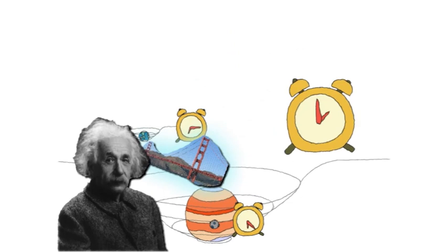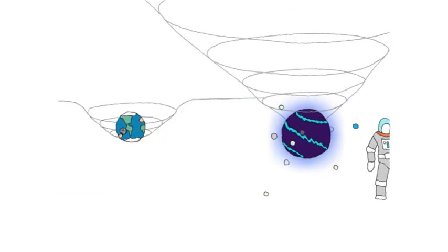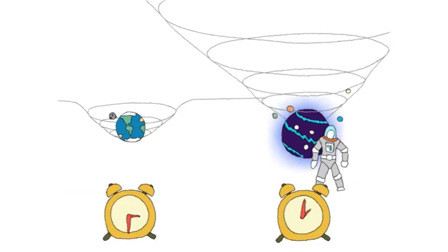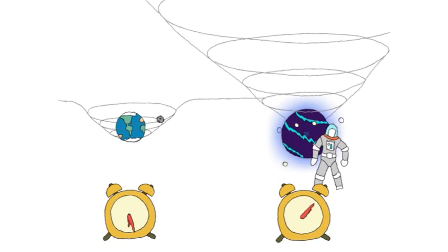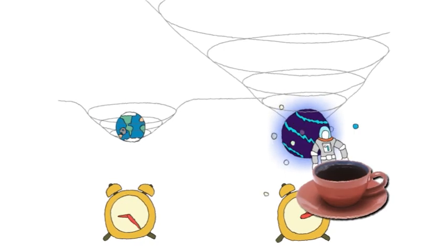Nowhere is gravity stronger than in the vicinity of a black hole. So if you could hang out near a black hole, time for you would move more slowly than on Earth, which means in the time it takes you to have a cup of coffee, empires could rise and fall at home.